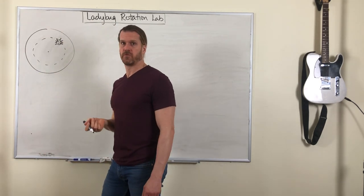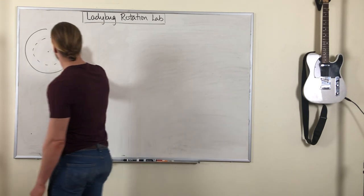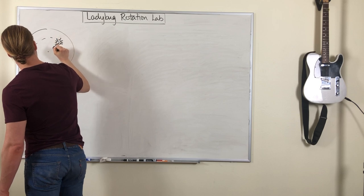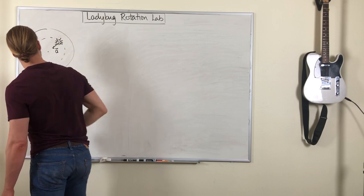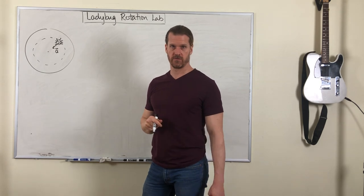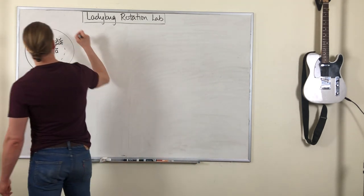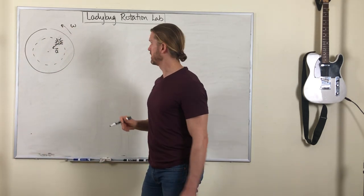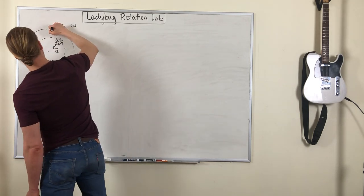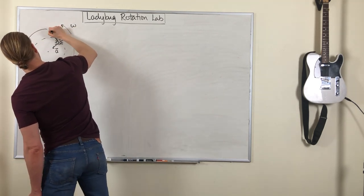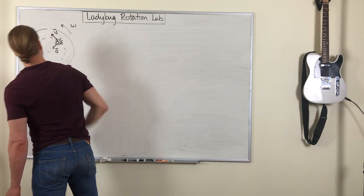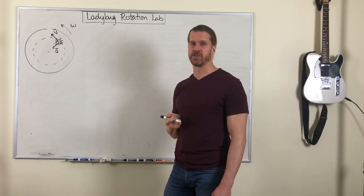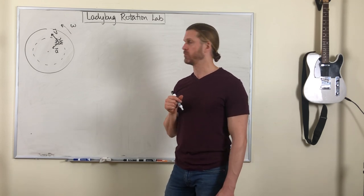You'll find when you do this simulation that at each point along the path, it doesn't matter which time you're looking at, the acceleration vector points toward the center of that circle. And let's say that this is rotating this way, it's rotating counterclockwise. Then the velocity vector is perpendicular to the acceleration vector. In other words, it's tangent to the circular path that the ladybug is moving on.